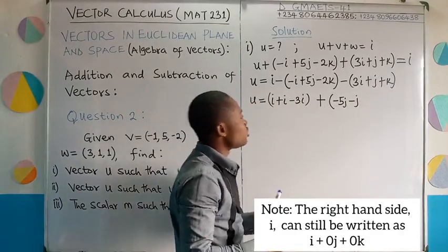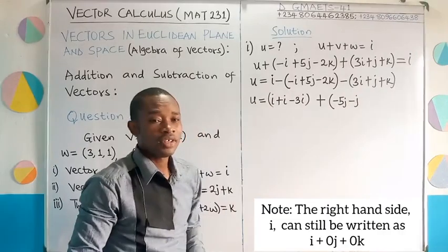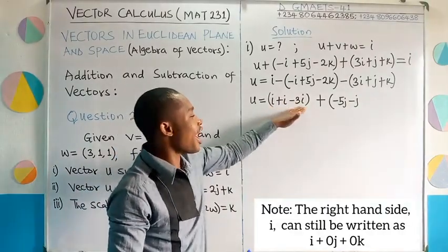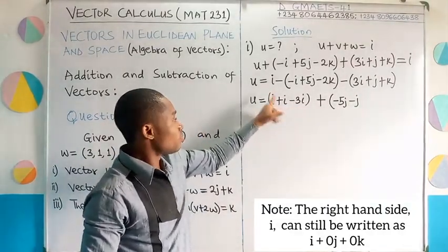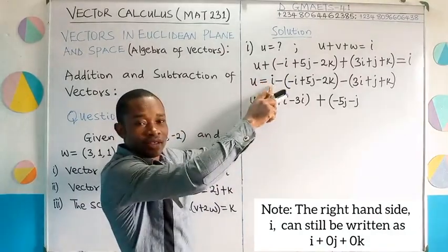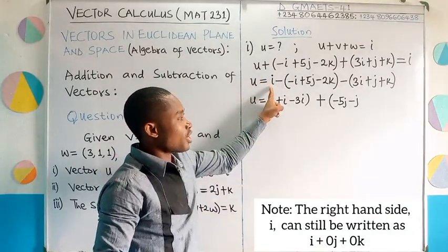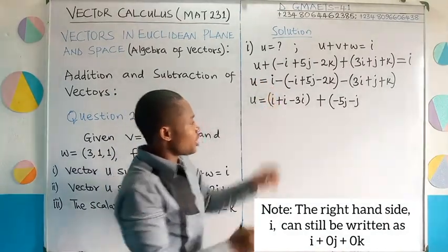And then next, I am going to deal with the k component. You'll notice that only the i component has three terms. Because you have one i originally given from the question. So let's move on to the k component.